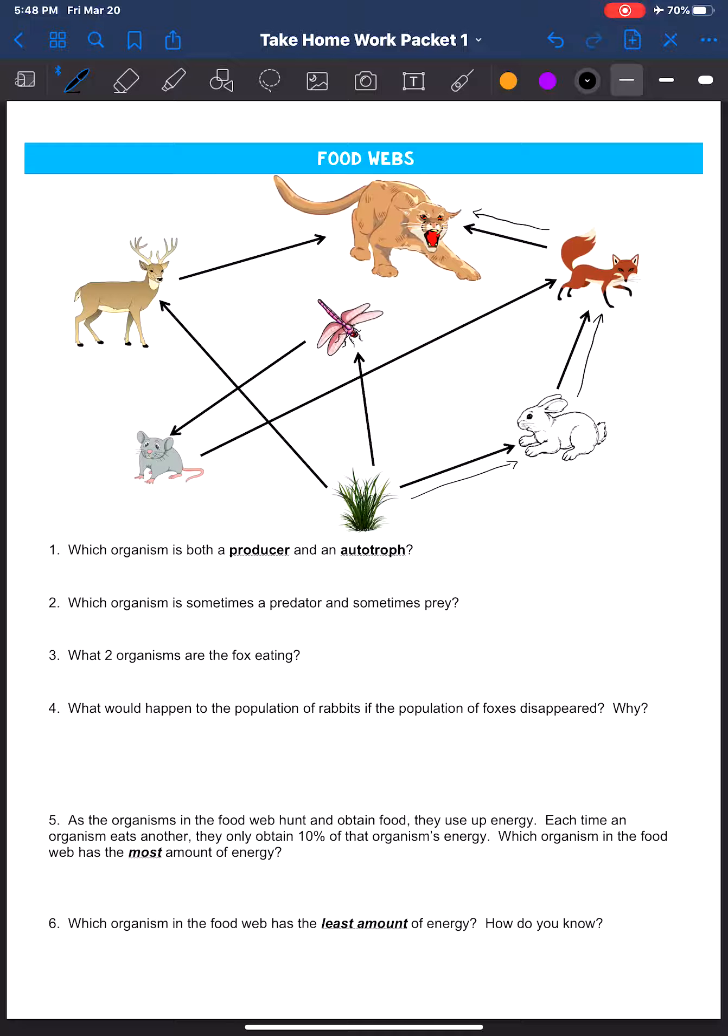When I look at number one, it says which one is both a producer and an autotroph, and that's just going to be straight vocabulary. If you remember when we did autotroph, the prefix auto meant self, and troph or trophic meant feeder or energy. When I think of what a self-feeder is or what type of organism would give its own energy, I'm going to think of a plant. A plant produces its own energy. So what is the plant in this food web here? It's going to be right here, it's the grass.